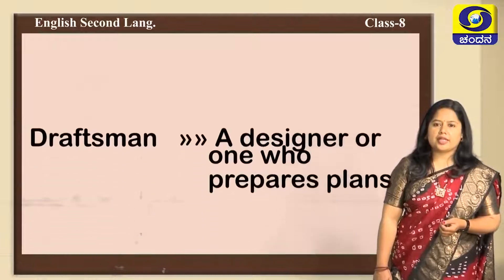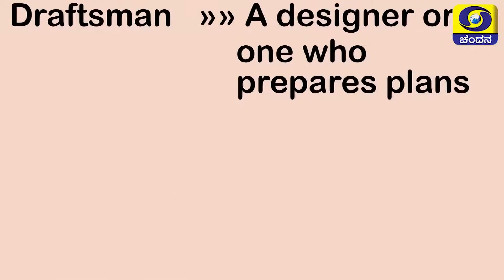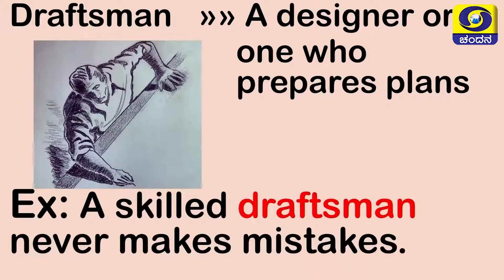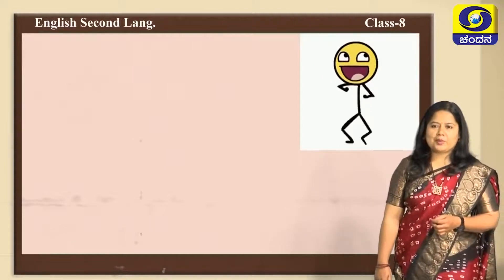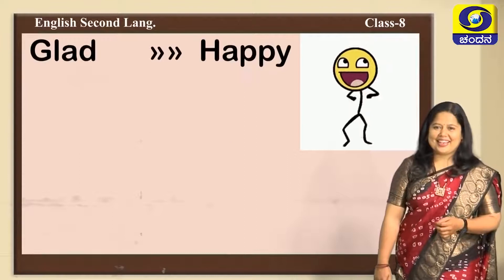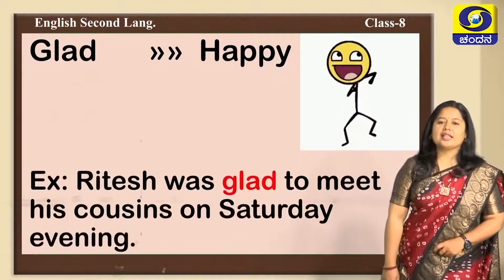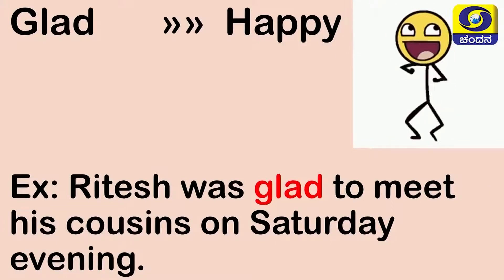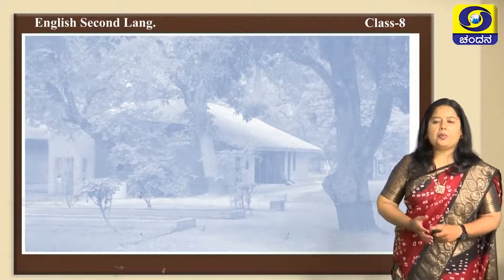The next word is 'draftsman' — a designer or one who prepares plans, a man who plans and designs. Example: 'A skilled draftsman never makes mistakes.' One who is really skillful will never make mistakes while doing drafts. And 'glad' means being happy. Example: 'Ritesh was glad to meet his cousins on Saturday evening.' We have now learnt all the new words in the lesson.